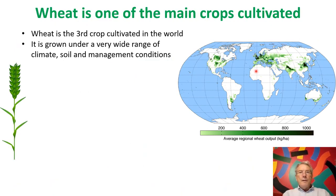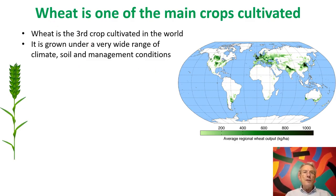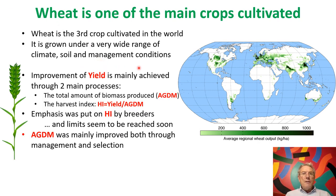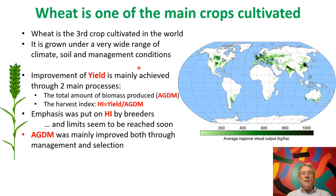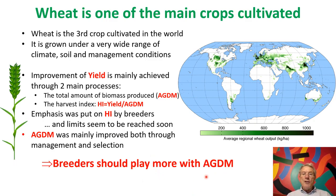Wheat is one of the main crops cultivated — it is the third crop cultivated in the world, grown under a very wide range of climate, soil, and management conditions. Improvement of yield is mainly achieved through two main processes: the total amount of biomass produced and the harvest index, which is the yield divided by the total biomass produced. Currently, emphasis was put on harvest index by breeders, but the limit seems to be reached soon — between 50 and 60% of the total biomass can be transferred to the grains. The only way to improve yield further is to improve the total amount of biomass produced by the crop.